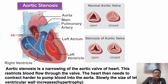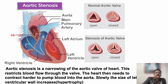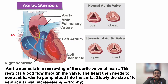But when the valve is tight and difficult to open, during systole blood cannot pass through the aortic valve to the aorta in the normal manner. So the pressure over the left ventricle increases. This narrowed aortic valve produces pressure overload over the left ventricle, which produces left ventricular hypertrophy, and later dilatation.